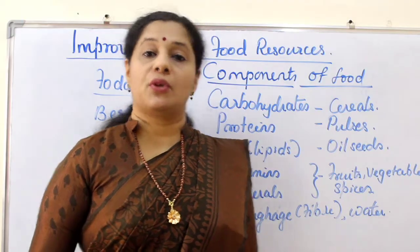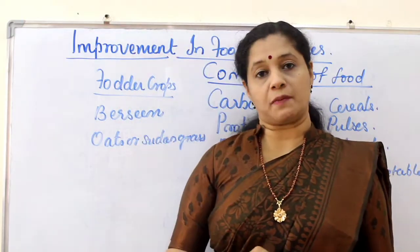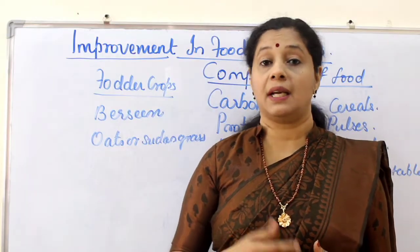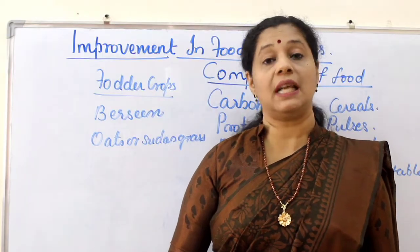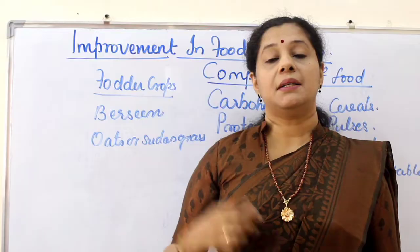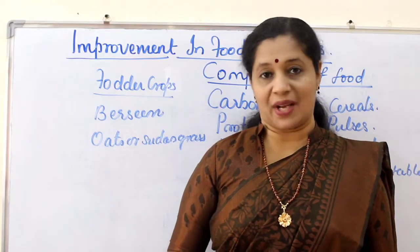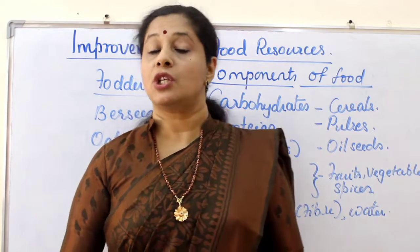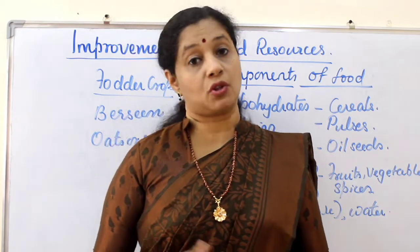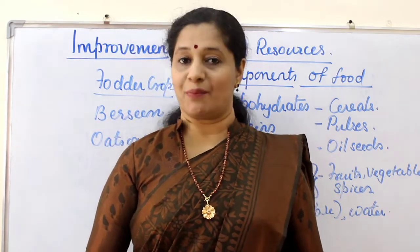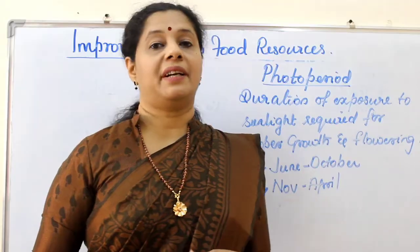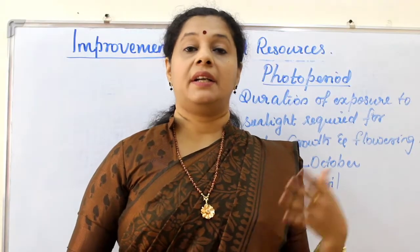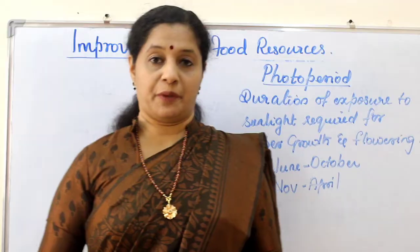Apart from food crops, we also grow fodder crops — crops grown to provide food to animals or livestock. These include berseem, oats, and sudan grass. You should know the components of food and at least two plant sources for each component. Different types of crops require different climate, temperature, and photoperiod.